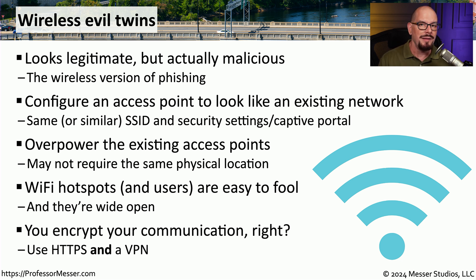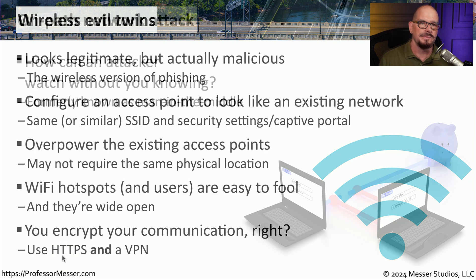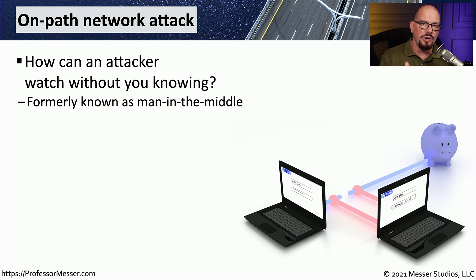One way to avoid problems associated with a wireless evil twin, even if you happen to connect to it, is to always send encrypted traffic. This means always having a VPN enabled, or at least always using HTTPS when communicating to a web server. These wireless evil twins are perfect for sitting in the middle of a conversation and watching all of the traffic that goes back and forth.